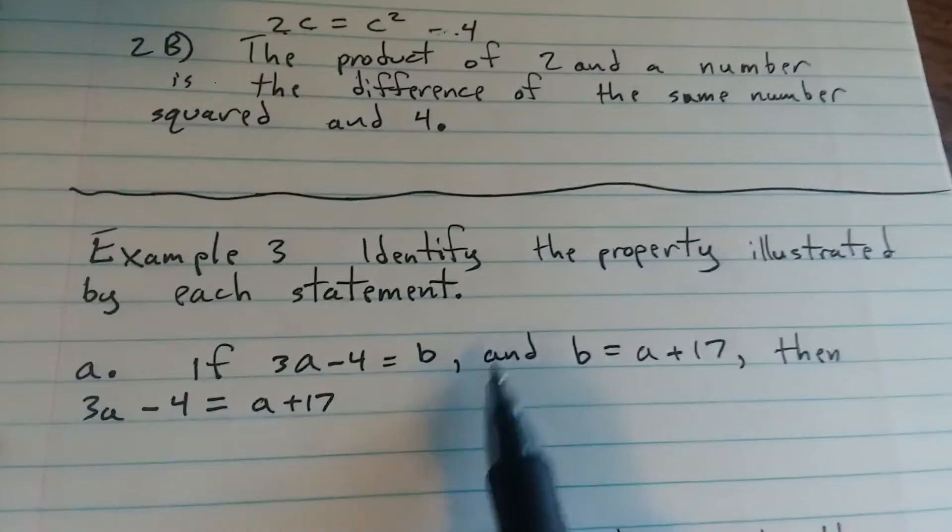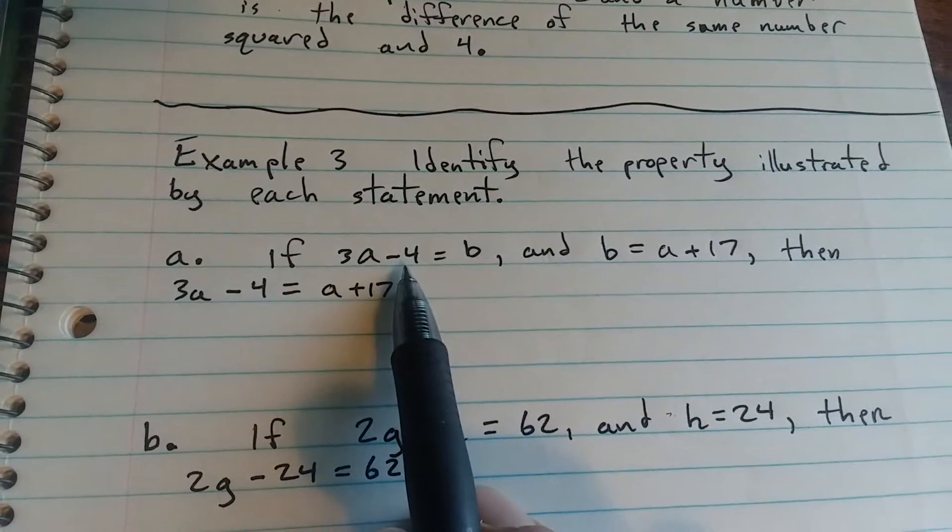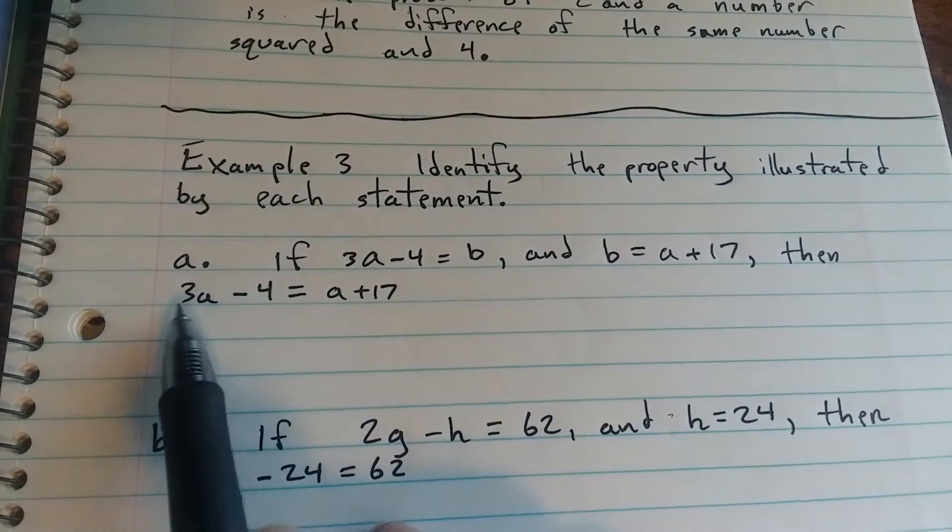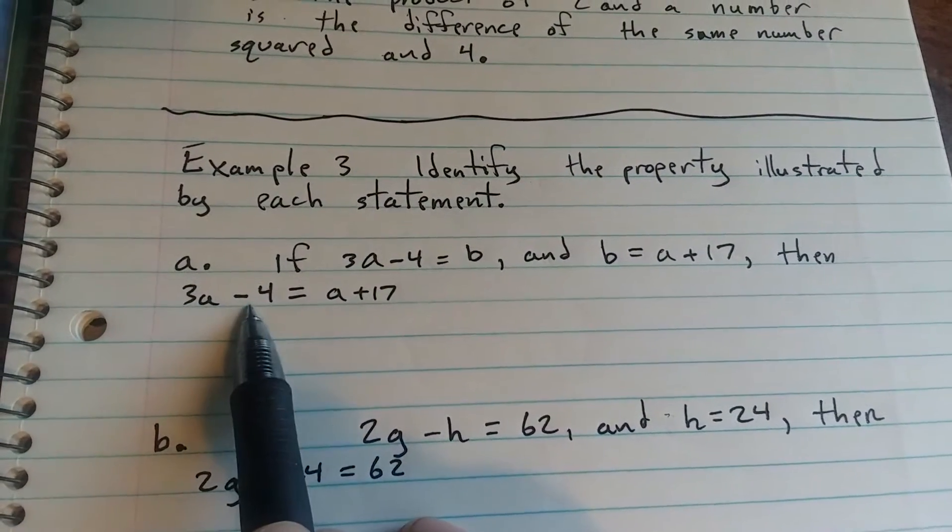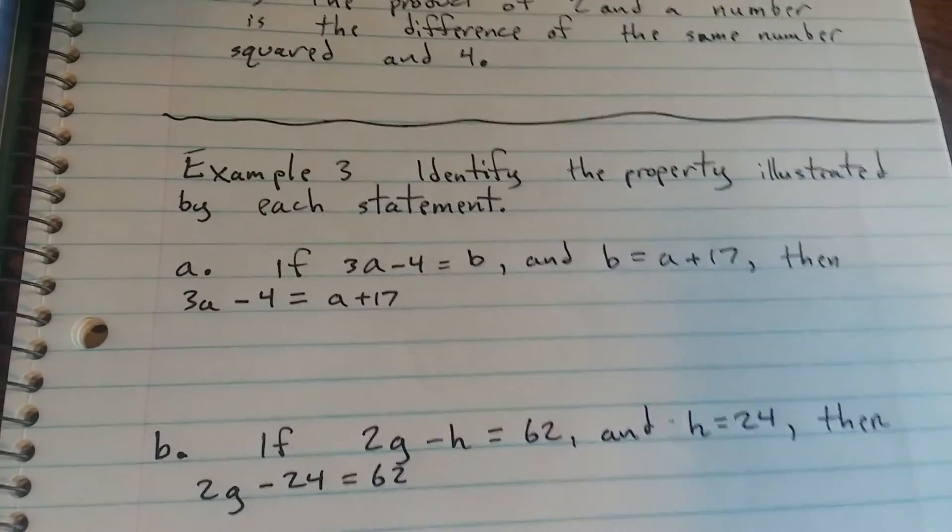Alright, example 3. Identify the property illustrated by each statement. If 3a minus 4 equals b, and b equals a plus 17, then 3a minus 4 equals a plus 17.